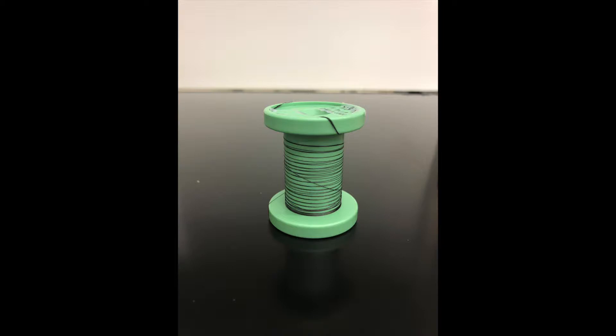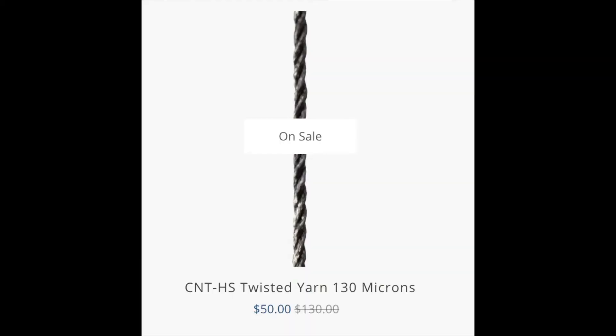This particular product is actually a new offering that we've just added to the store. It's an improved version of our 130 micron diameter carbon nanotube yarn with a higher mechanical strength than our normal grade. You can find this listed on our store as CNT-HS twisted yarn 130 microns.